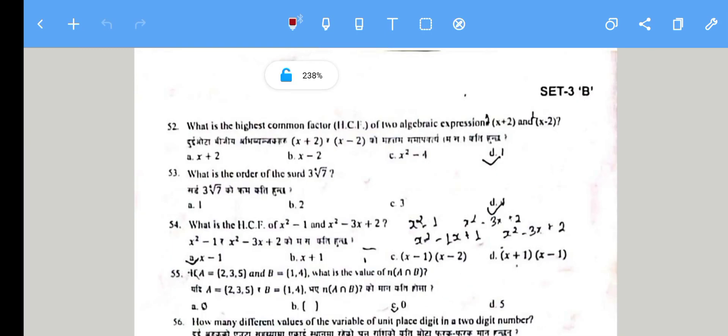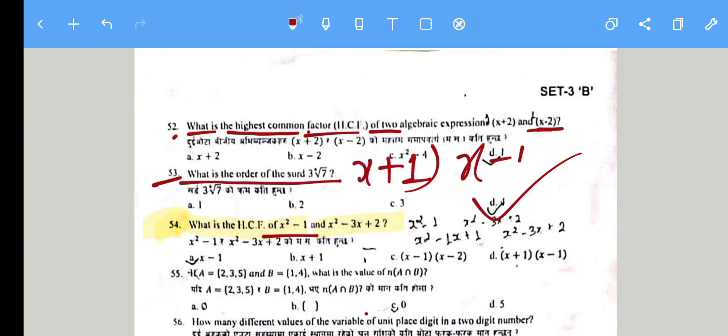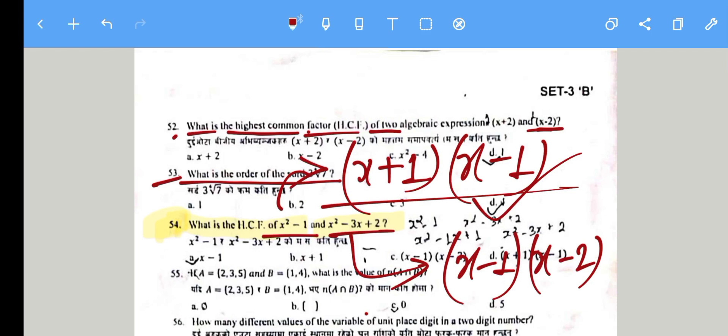Question 52: What is the highest common factor (HCF) of (x + 2)(x - 2)? The answer is 1. Question 53: What is the order of √7? The order is 4, so option D is correct. Question 54: What is the CF of x² - 1 and x² - 3x + 2? Factorizing both expressions, the common factor is x - 1.